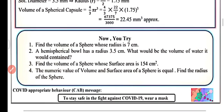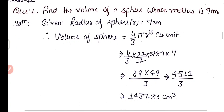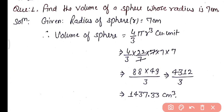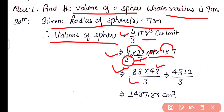Now we have four practice questions. Question 1: find the volume of a sphere whose radius is 7 centimeters. Volume of sphere = 4/3 π r³ = 4/3 × (22/7) × 7³. The 7s cancel, giving 22 × 4 = 88, and 7² = 49 in the numerator with 3 in the denominator, giving 4312/3. After dividing, we get 1437.33 centimeter cube as the volume of the sphere with radius 7 centimeters.